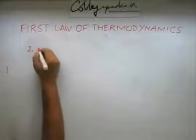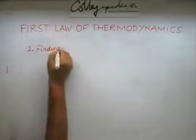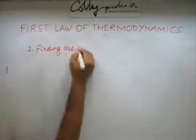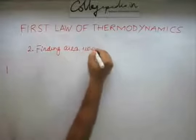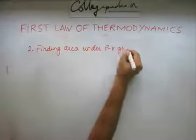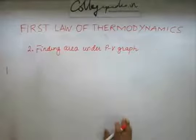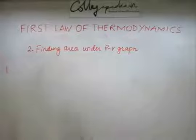This is by finding the area under the PV graph. So if you can figure out how the PV graph is going to look like and you can also indicate certain points on the graph, then you can automatically find the area by some geometrical means.